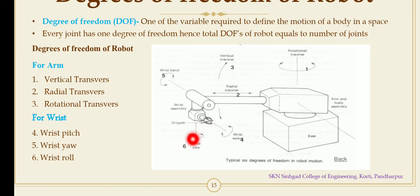This is the next degree of freedom, wrist yaw. It is rotation on the horizontal plane about the vertical axis. And last is wrist roll.